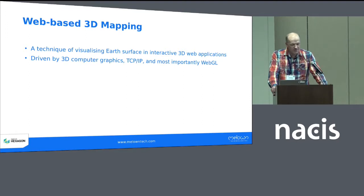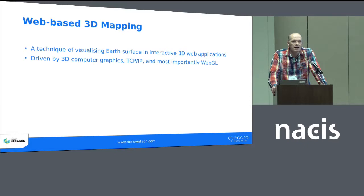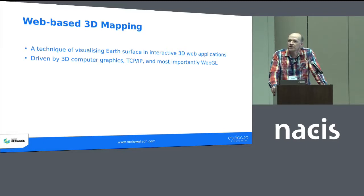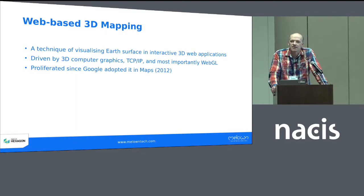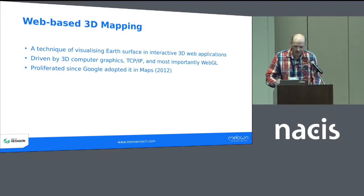That technique is fairly recent. It's been driven by 3D computer graphics, by TCP/IP — that is, by the suite of protocols that basically power the Internet — and most importantly and recently by WebGL, which is a library that has made computer graphics vastly available in web browsers. It has proliferated since Google adopted it in Maps in 2012. It's been a fairly silent change, but in 2012 Google carried out a complete overhaul of its mapping technology, so it's now based on 3D mapping technology.